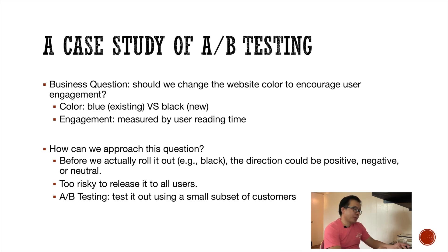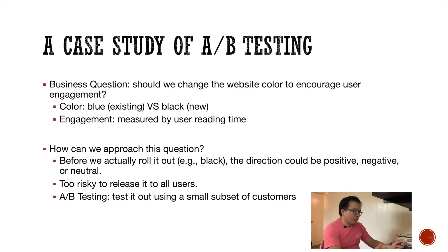How can we approach this question? The most straightforward way is to simply roll out the new color to all users and see how user engagement metrics change. But the downside is we don't know how the new change will affect our users — the effect can be positive, negative, or neutral. If we roll out the feature without testing it, we may lose or hurt our users, and in a production environment we cannot tolerate this type of risk.